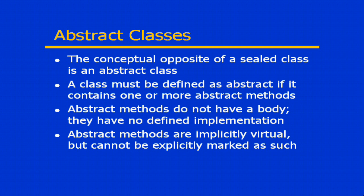Please note, in order to qualify as an abstract method, it's not that it has an empty implementation — it has no implementation at all. There is no body in an abstract method. Abstract methods are implicitly virtual, because the only way to really use an abstract method is to provide an overriding implementation of the method, since there is no implementation found in the base class.